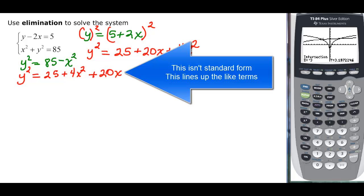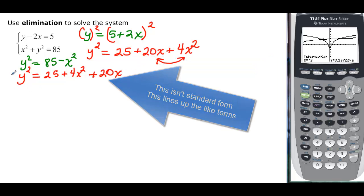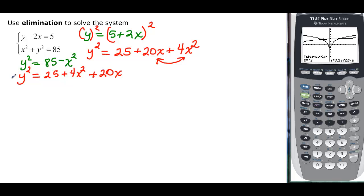I'm just going to kind of switch these two terms so things line up nicely. And if I can get them to be opposites, then nice things happen. So, I'm going to multiply through by a negative in here. And when I multiply through in a negative, that becomes a negative y² and a negative 25 and a negative 4x² and a negative 20. And now, I can add.